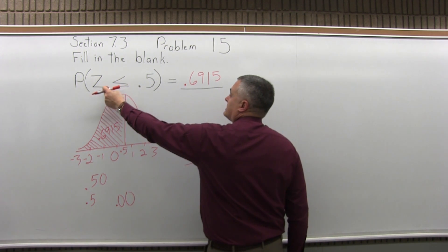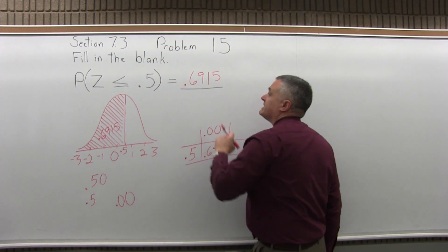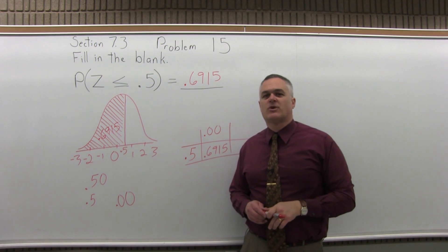So the probability that z is less than or equal to .5 is .6915, or a little bit more than a 69% probability.